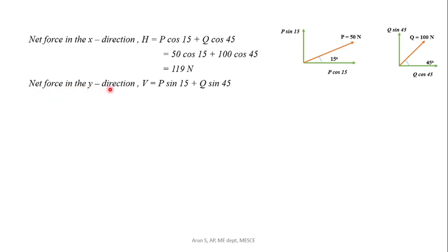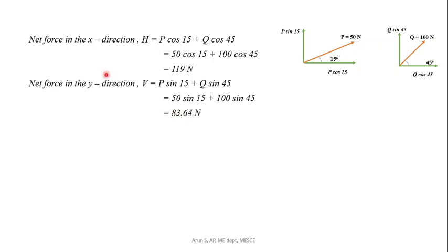Similarly, the net force in the y-axis, V, will be equal to P·sin15 plus Q·sin45. Substituting the values of P and Q, we get V equal to 83.64 Newton. H is the resultant projection on the x-axis and V is the resultant projection on the y-axis.